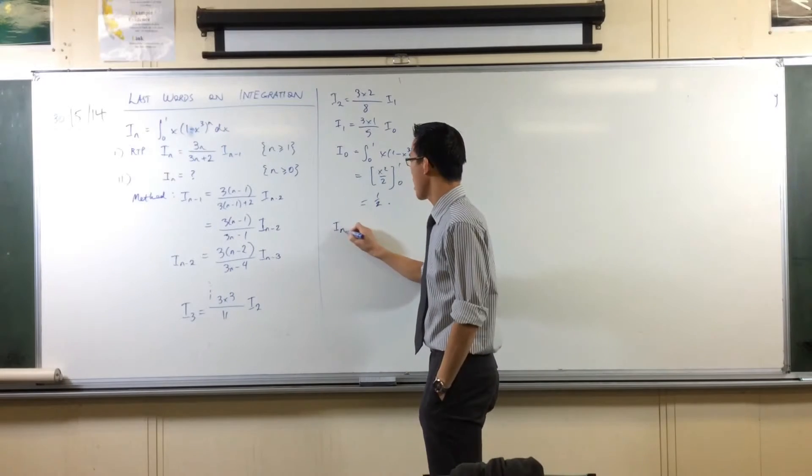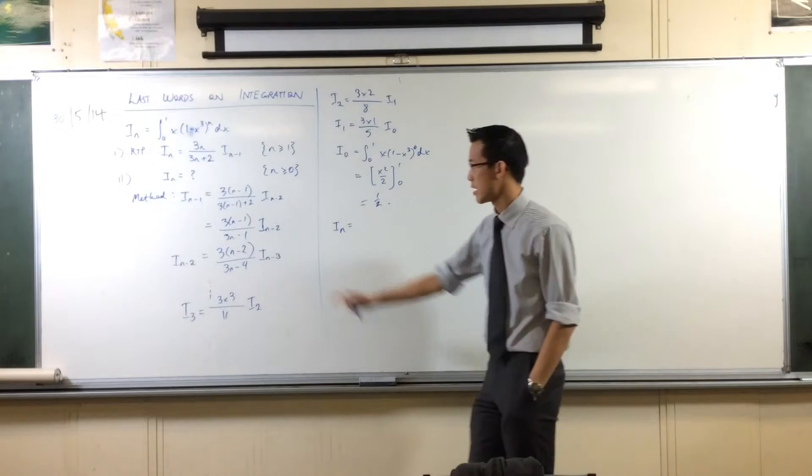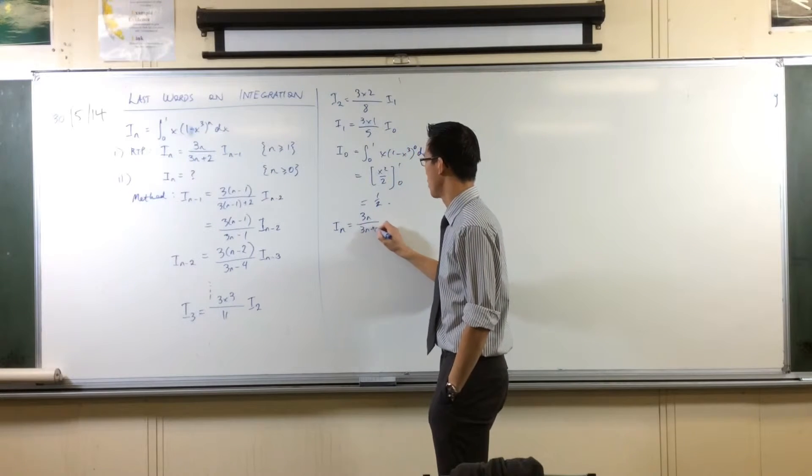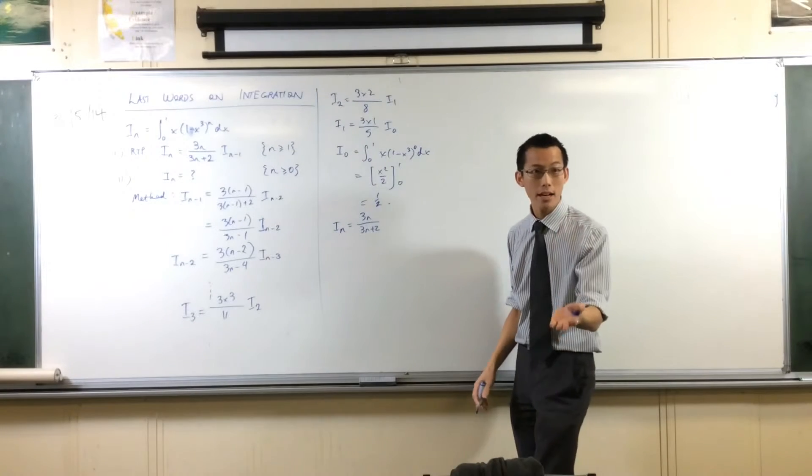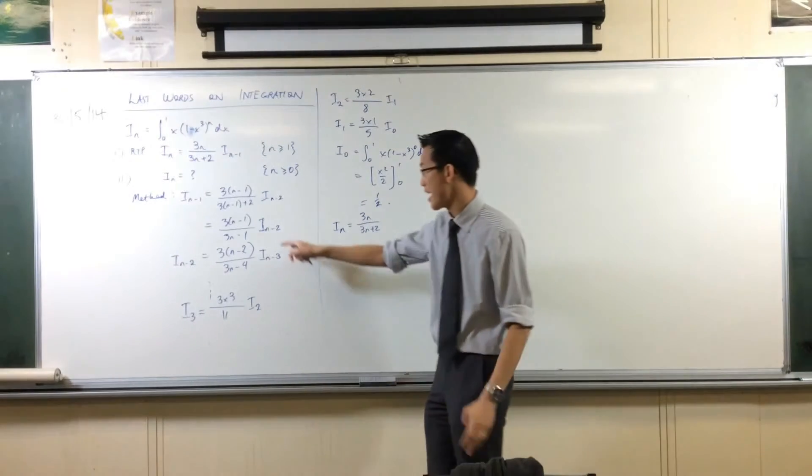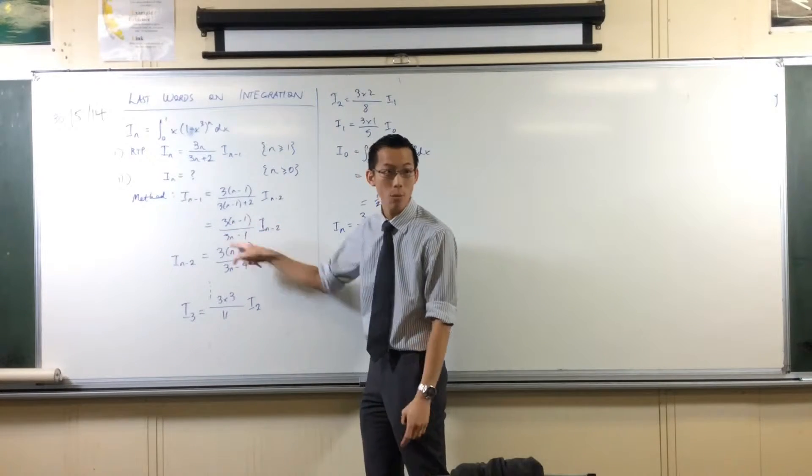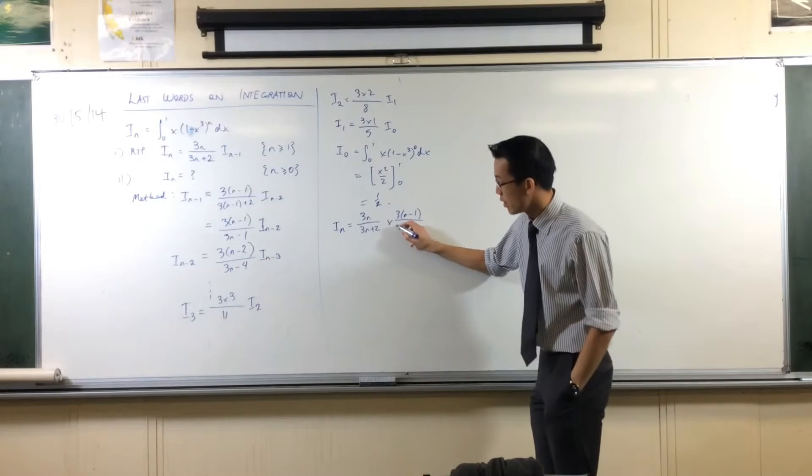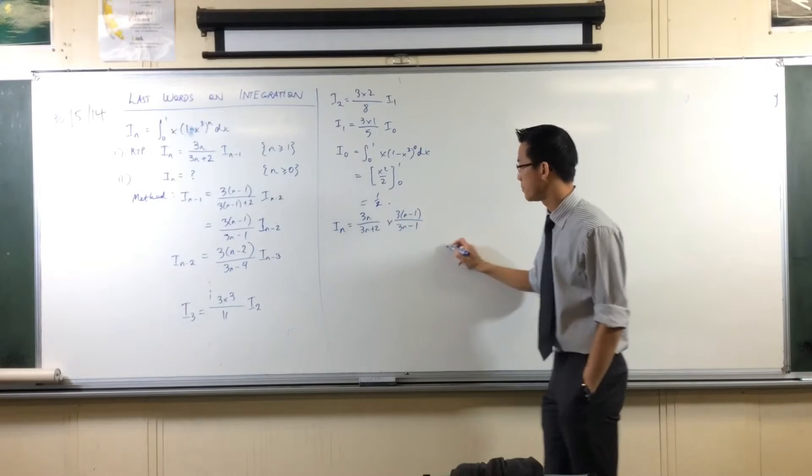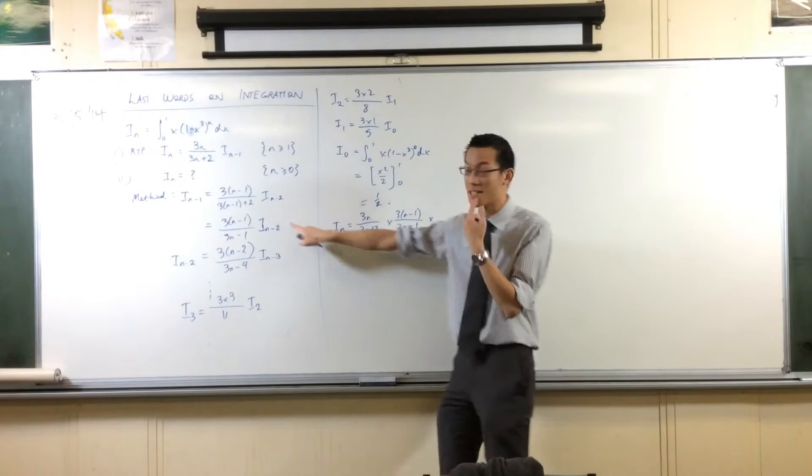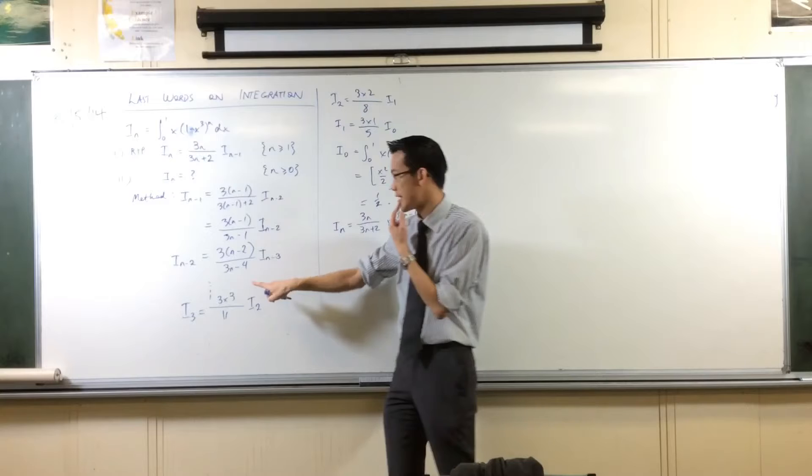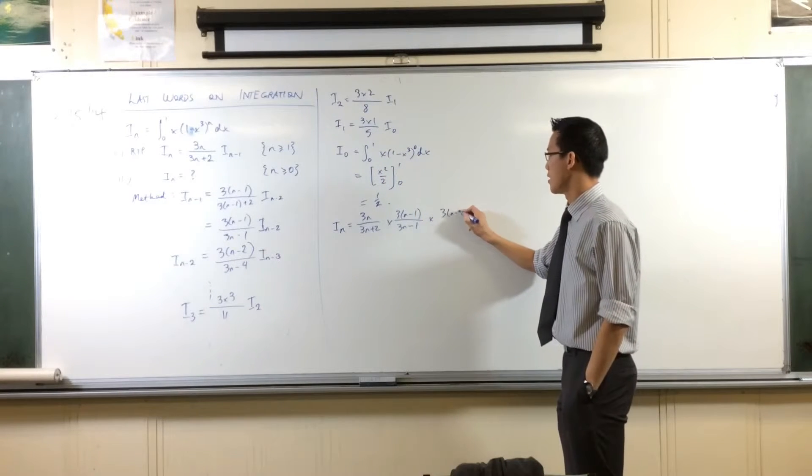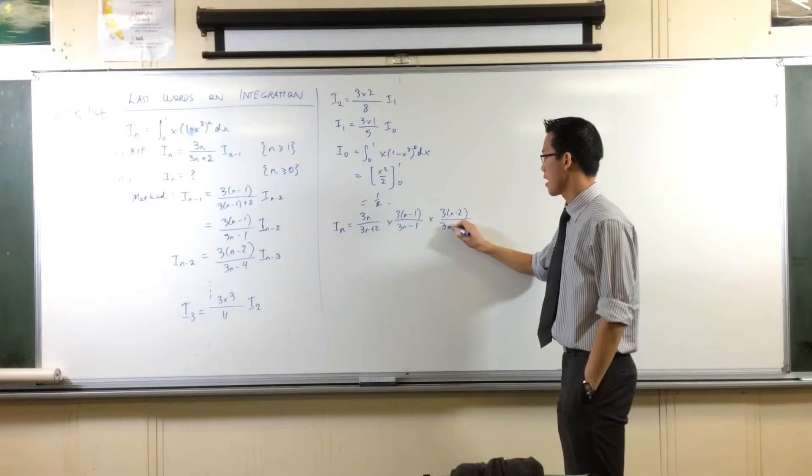The top rung says it's this times the next rung. What's the next rung look like? Well, it's this times the next rung. And what's that look like? It looks like this times and so on, all the way until here. So therefore, I can say, I_n is equal to, I'll start with 3n on 3n plus 2.